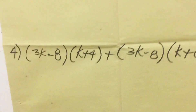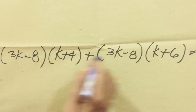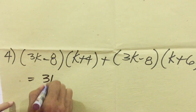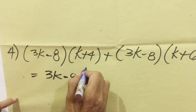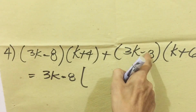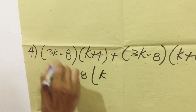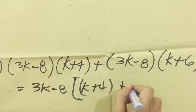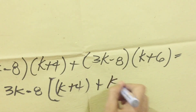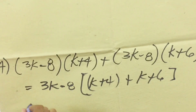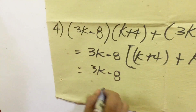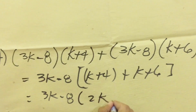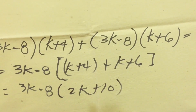Number 4. The common factor here is the binomial (3K - 8). We have (3K - 8)(K + 4) and (3K - 8)(K + 6) — the binomials (K+4) and (K+6) are different. So the common factor is (3K - 8). Dividing each term leaves (K + 4) and (K + 6). We can combine these: K + K is 2K, and 4 + 6 is 10. The final answer for number 4 is (3K - 8)(2K + 10).